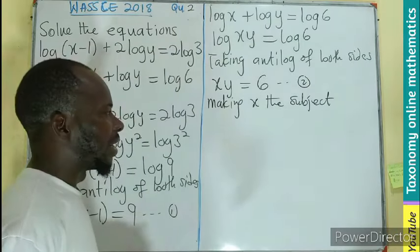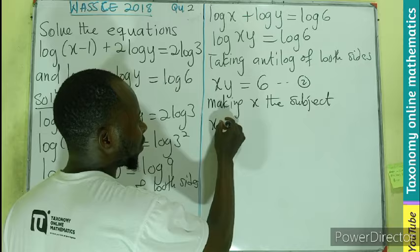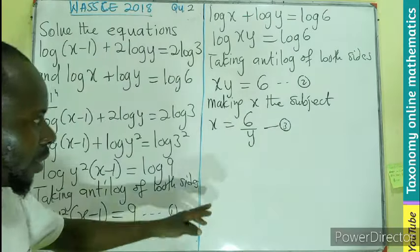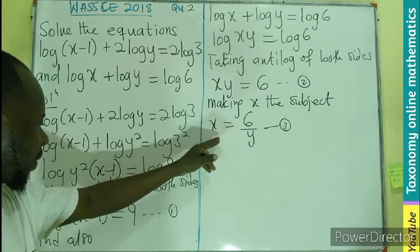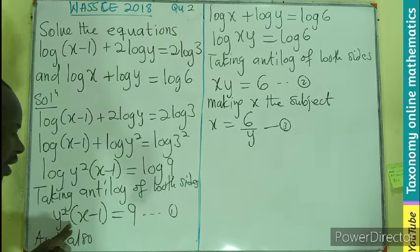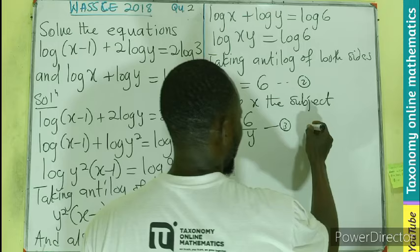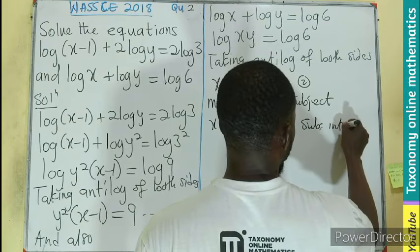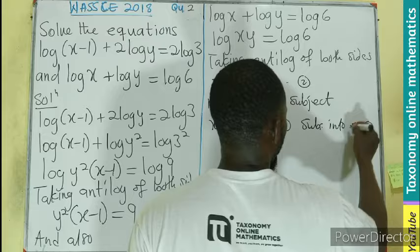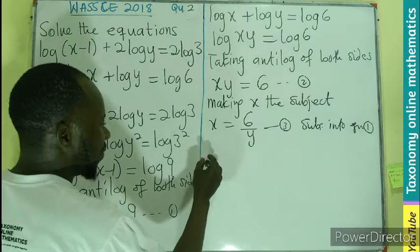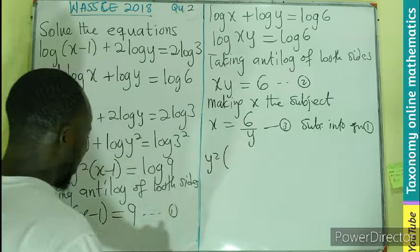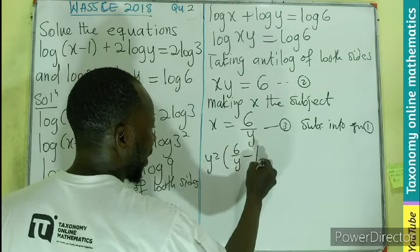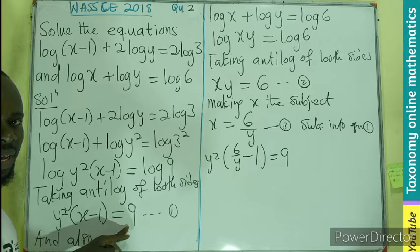So when you make x the subject, you have x = 6/y as equation 3. So we put this equation 3 back into equation 1 whenever we see x. So let's perform substitute into equation 1.